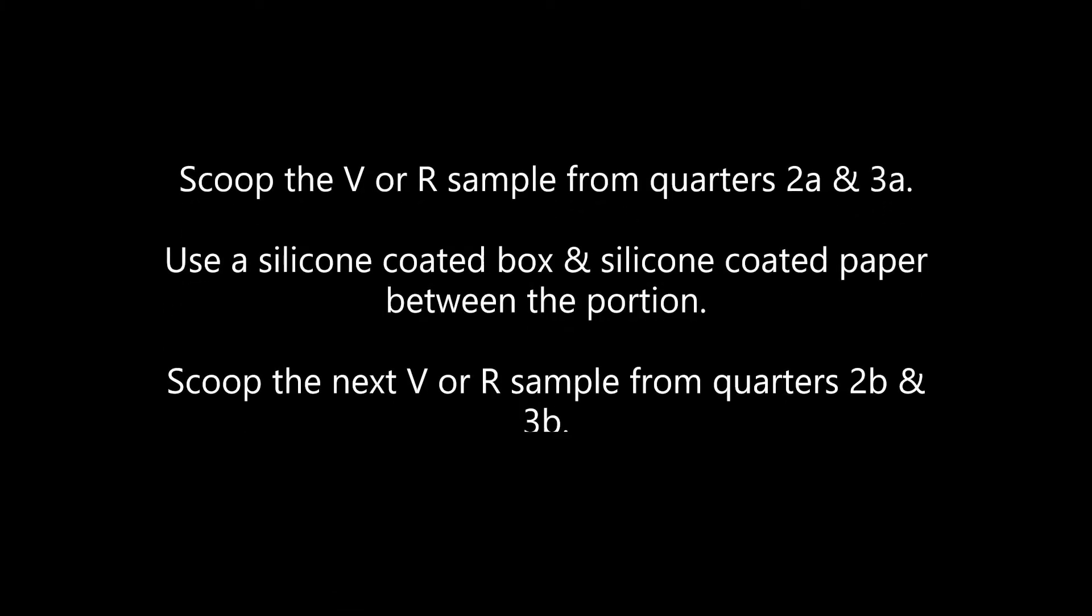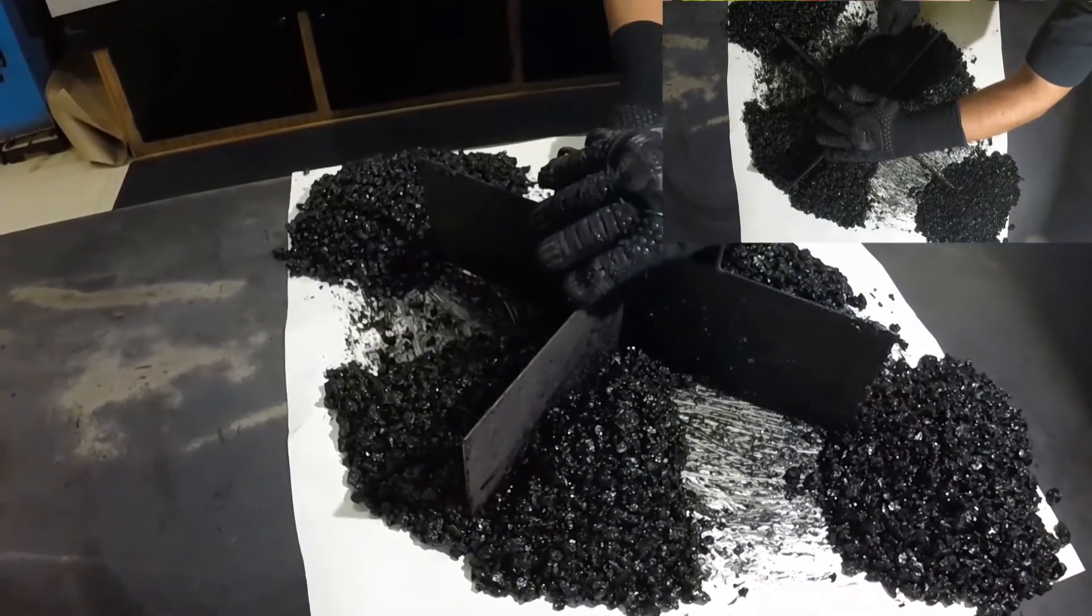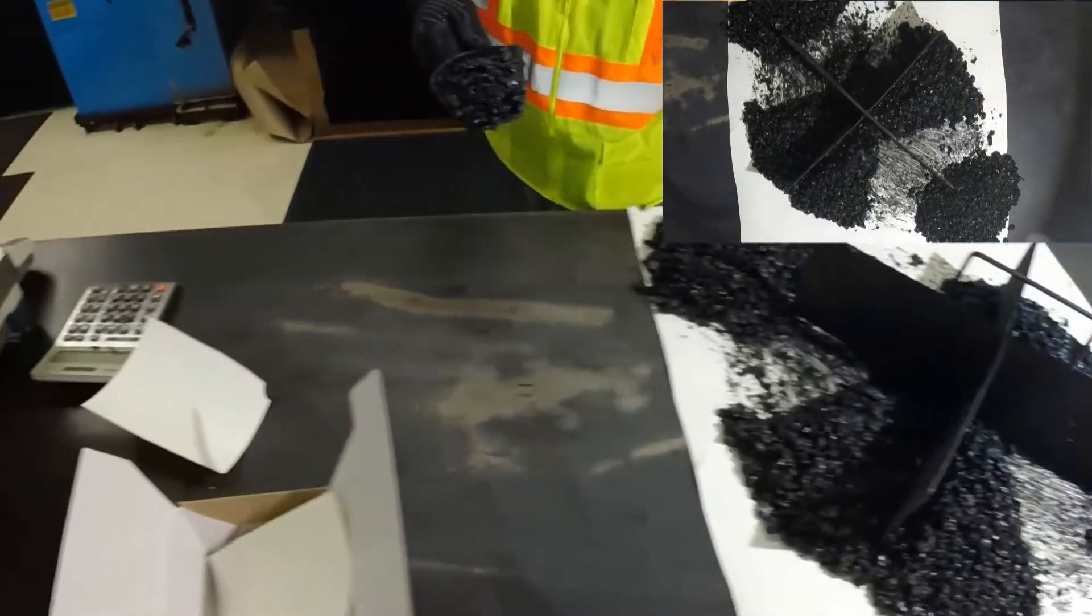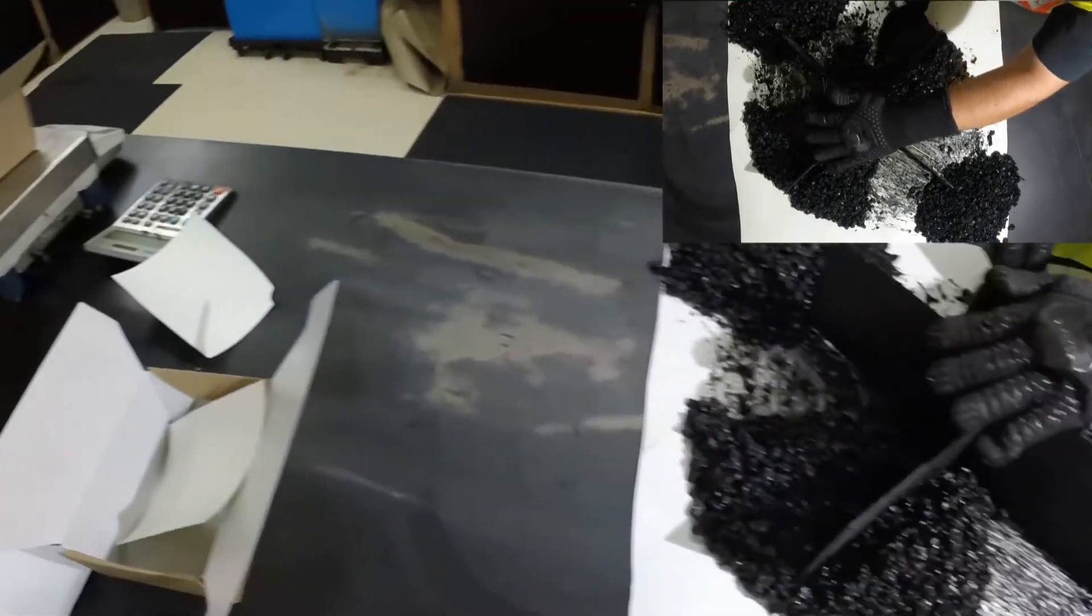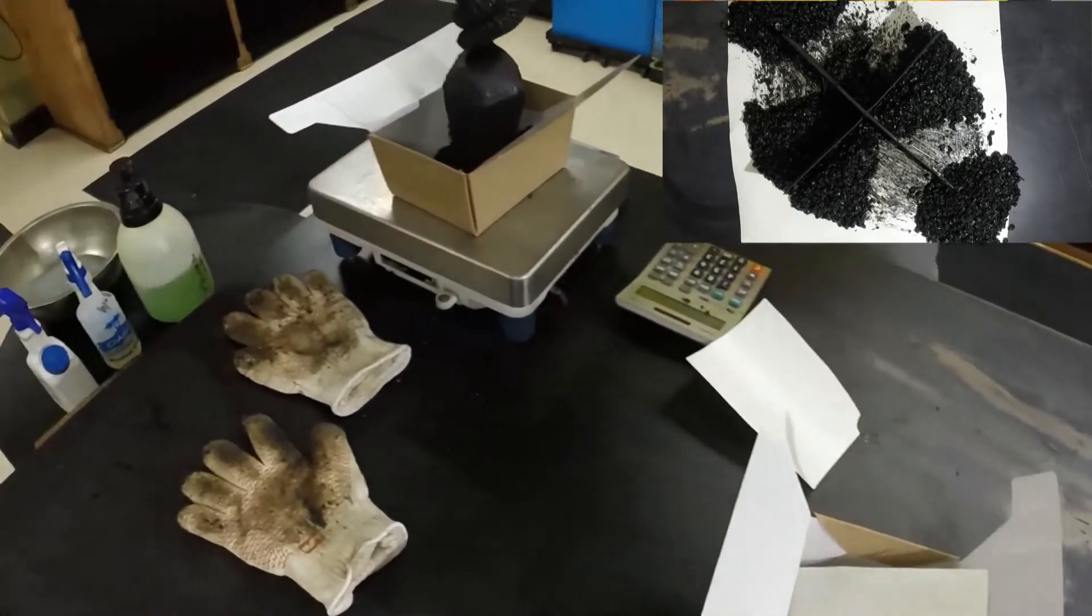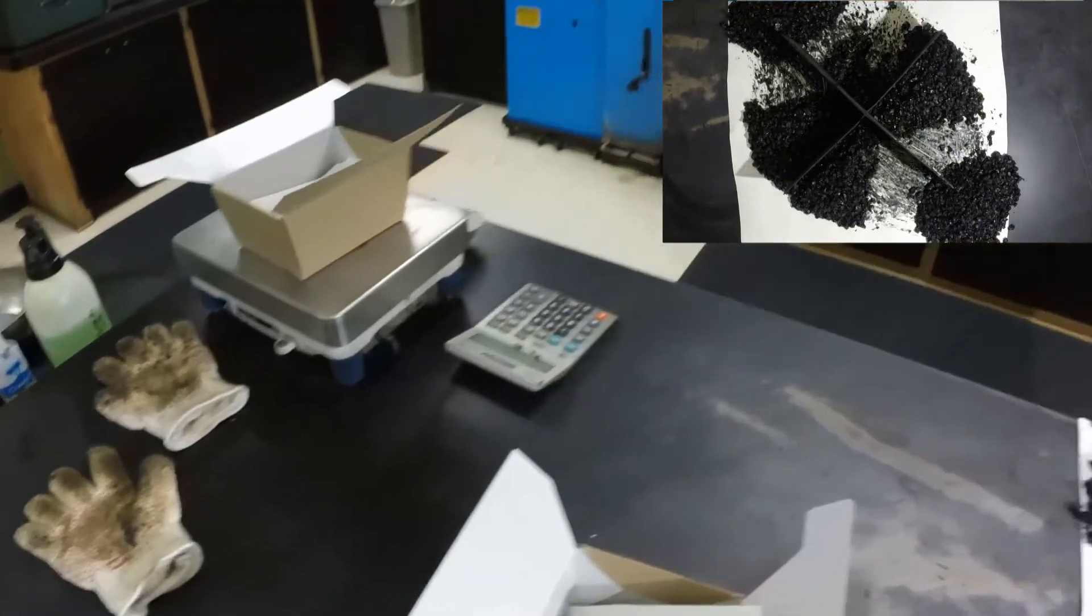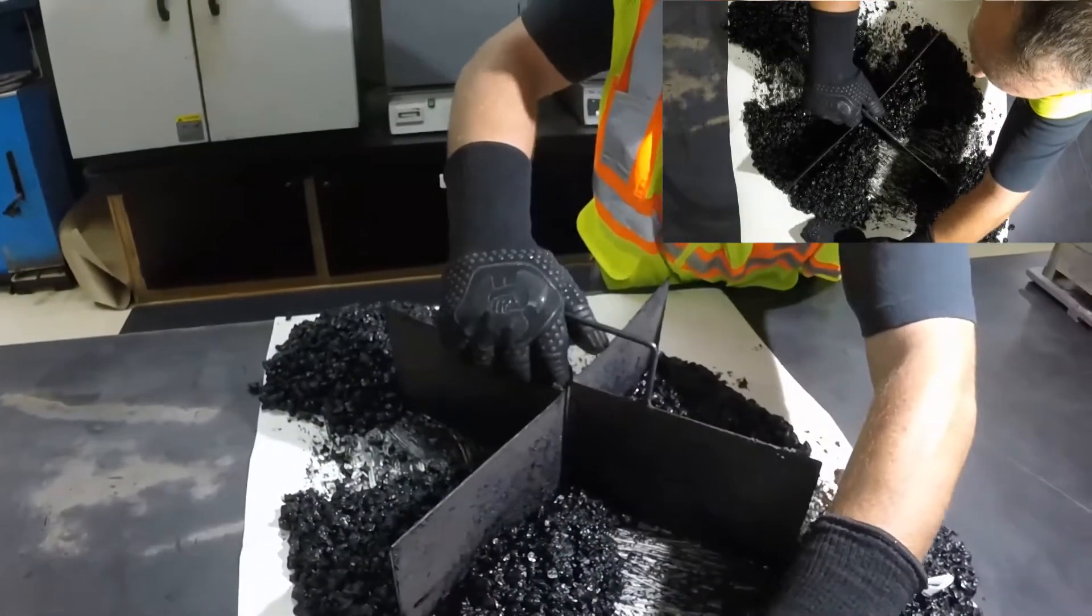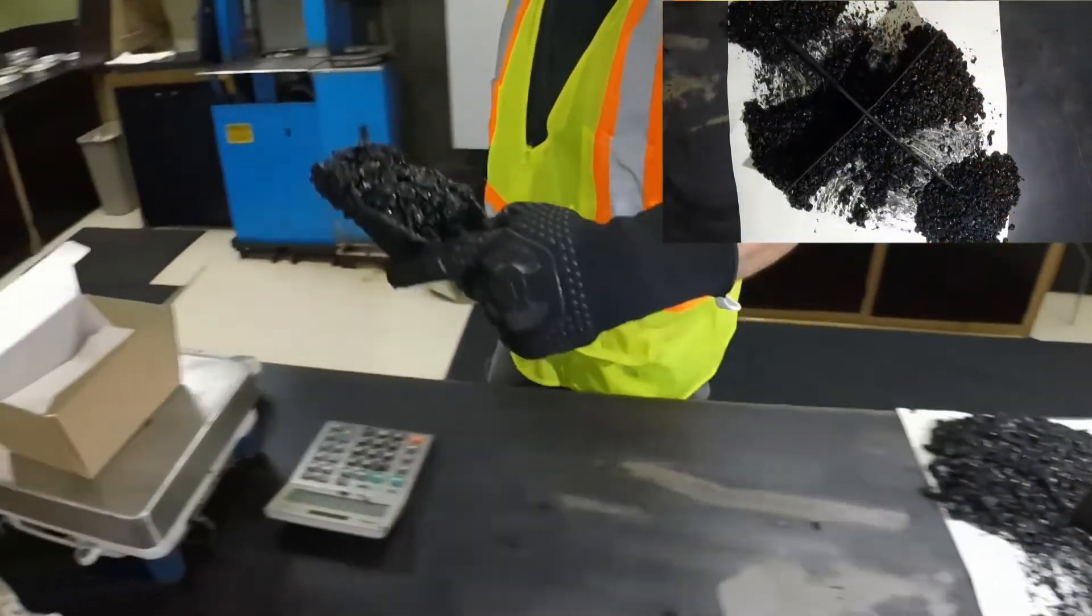Scoop the V or R sample from opposite quarters 2A and 3A. Scoop approximately half the required mass from one quarter into the coated box. Insert a piece of silicone paper to separate the two halves of the sample. Scoop the second half of the sample into the box from the opposite quarter on top of the paper. Repeat this procedure for the next V or R sample from the opposite quarters 2B and 3B.